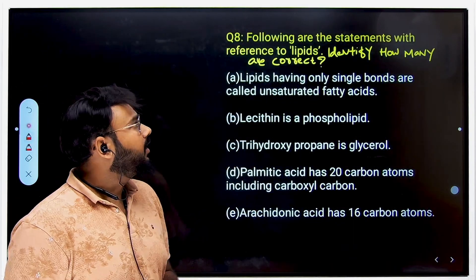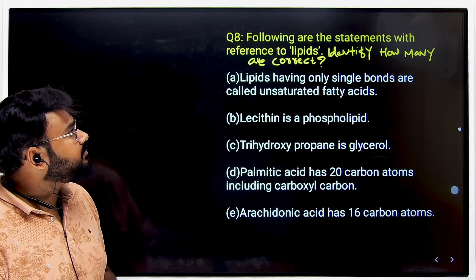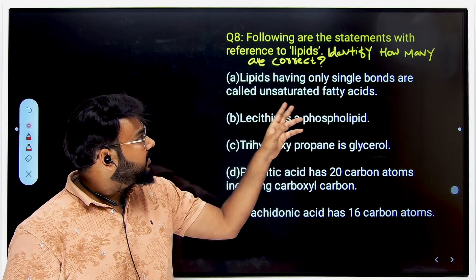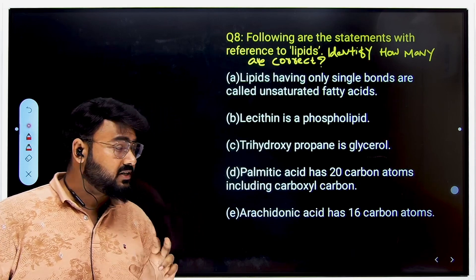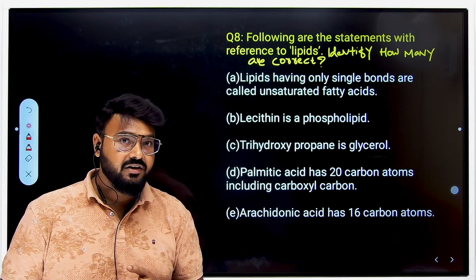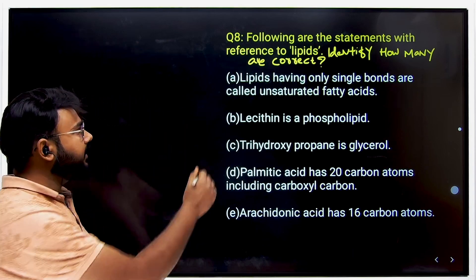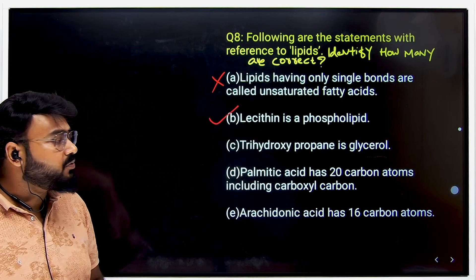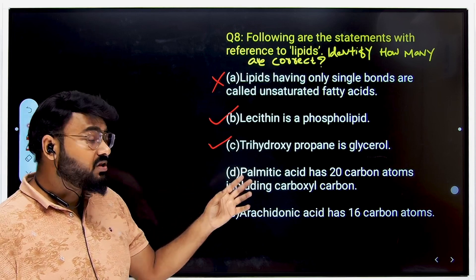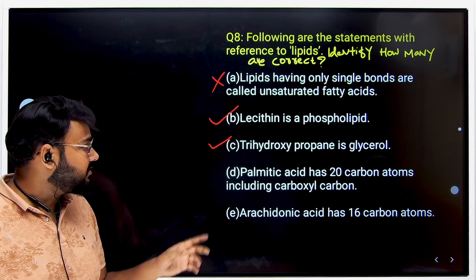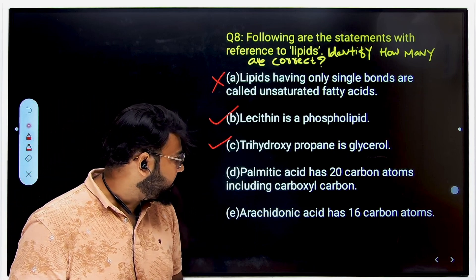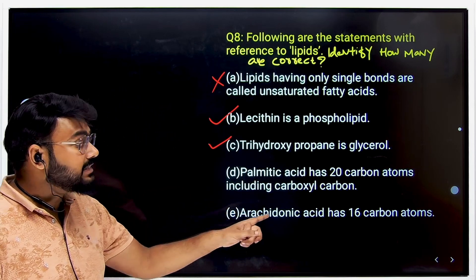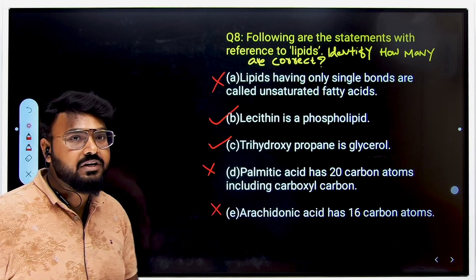The next question asks how many of the following statements about lipids are correct: lipids have only single bonds and are unsaturated — false, single bonds are saturated; lipids have both saturated and unsaturated bonds — true; lecithin is a phospholipid — correct; trihydroxy propane is glycerol — correct; palmitic acid has 20 carbons — false, it has 16; arachidonic acid has 16 carbons — false, it has 20. So two statements are correct.